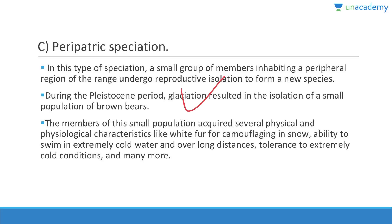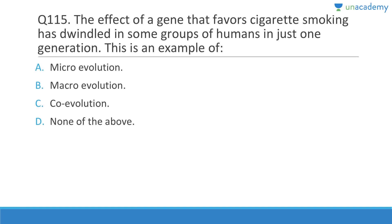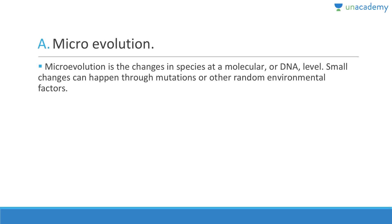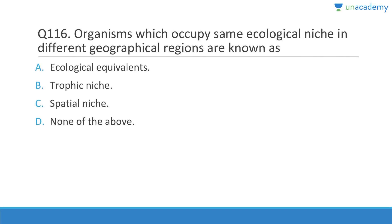The effect of a gene that favored cigarette smoking, having emerged in some groups of humans in just one generation, is an example of microevolution, because it is happening at the DNA level. Microevolution is a change in species at the molecular or DNA level; small changes can happen through mutations or other random environmental factors.